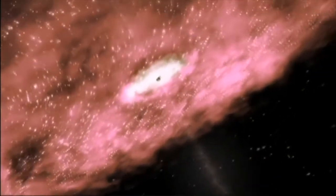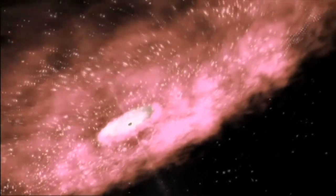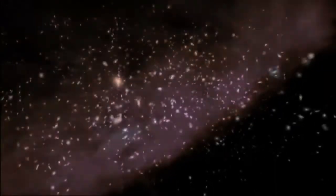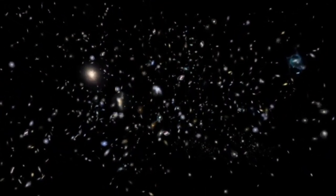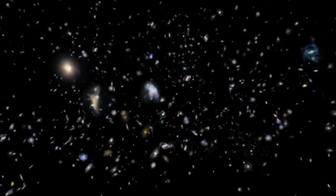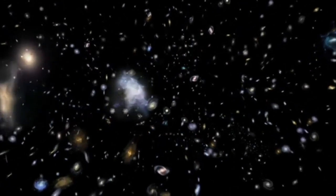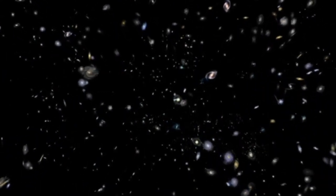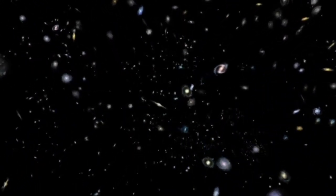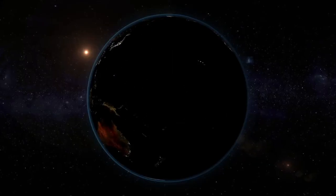However, the universe has given us one more measuring stick to work with, type 1a supernova. These are a very specific type of supernova, where in a binary star system, a dense white dwarf starts to cannibalise a larger red dwarf. Once the white dwarf hits a critical mass, the star becomes unstable and undergoes a runaway nuclear fusion reaction, producing an extremely bright event that can rival an entire galaxy in brightness.